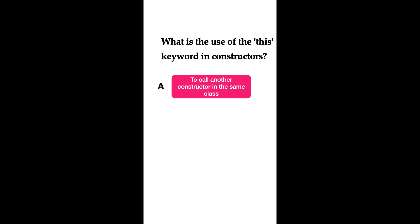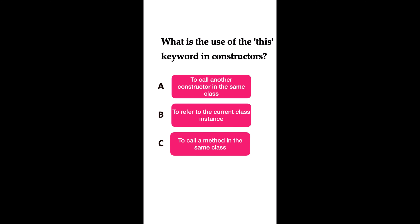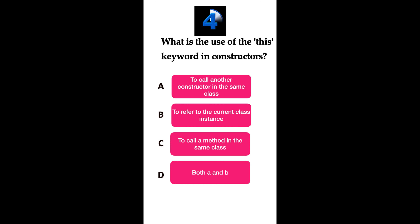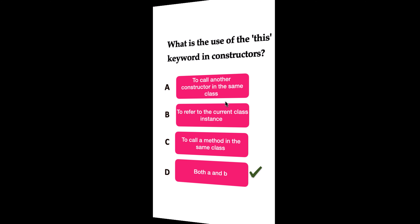What is the use of the this keyword in constructors? Option A: to call another constructor in the same class. Option B: to refer to the current class instance. Option C: to call a method in the same class. Option D: both A and B. The correct answer is both option A and option B. The this keyword is used in a constructor to call another constructor in the same class, and it is also used to refer to the current class instance.